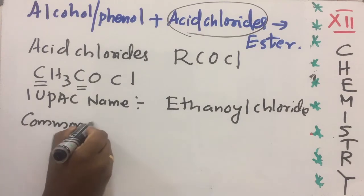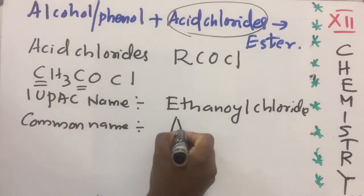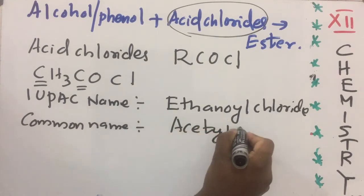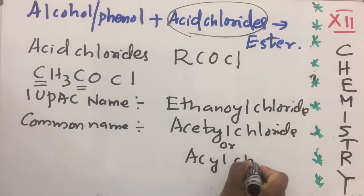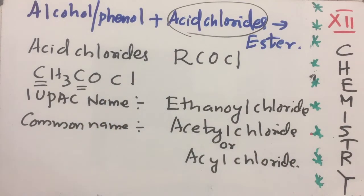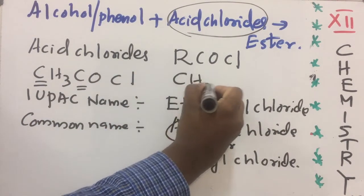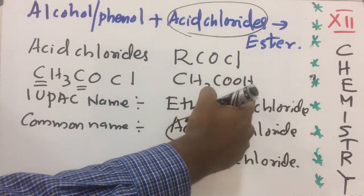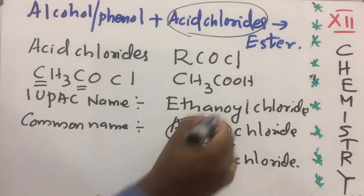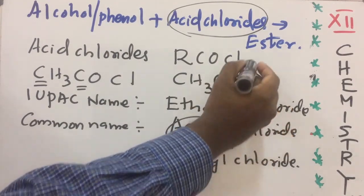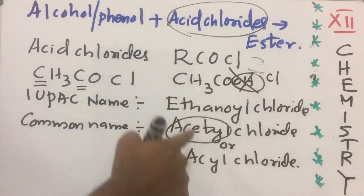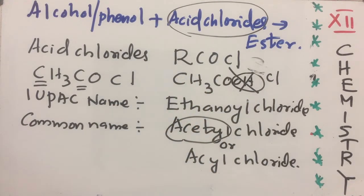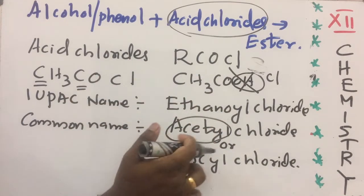The common name of CH3COCl is acetyl chloride. Why is it called acetyl chloride? Because it is obtained from acetic acid — CH3COOH — where the OH is replaced by Cl to form CH3COCl. So it is obtained from acetic acid, which is why it is called acetyl chloride.